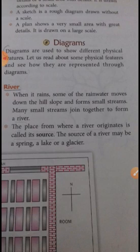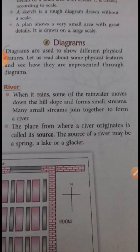The place from where a river originates is called its source. The source of a river may be a spring, a lake, or a glacier.